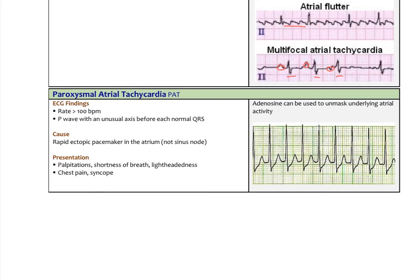Paroxysmal atrial tachycardia, or unifocal atrial tachycardia, involves a single ectopic pacemaker in the atrium. On the ECG, we see an unusual P wave before each QRS complex, but the morphology — the shape — is the same in each one, meaning it's a single pacemaker. This causes a very rapid firing faster than the SA node, potentially decreasing cardiac output. Clinically, all these tachyarrhythmias present with tachycardia, so anytime a patient has tachycardia, we really want to refer them for an ECG to distinguish these different rhythms.